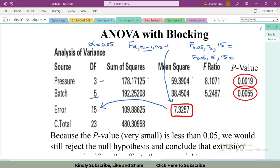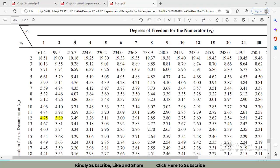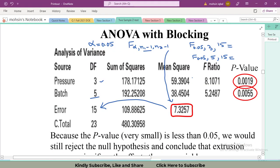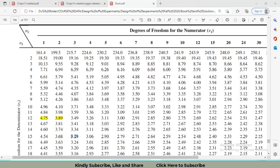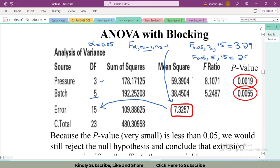Let's go to the F distribution table. The first one is 3 and 15, I got 3.29. Now I have to calculate 5, 15. So 5 and then 15 equals 2.90.